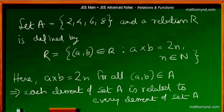That is, a times b equals 2n for all ordered pairs (a, b) which are elements of A. That means we'll be getting all possible ordered pairs as far as this particular relation is concerned.